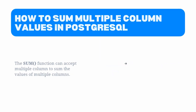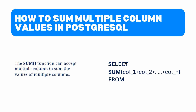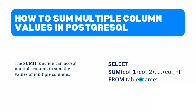Now let's move to the next topic: how to sum multiple column values in PostgreSQL using a SUM function. To sum multiple columns in PostgreSQL we can use the plus sign inside the SUM function. In the syntax, column name 1, column name 2, and so on are the names of the columns whose values you want to sum, and we use the plus sign after each column to add all their values together.